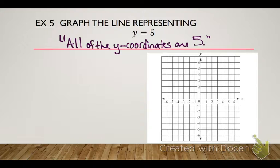So if all the y coordinates are 5, start picking points in your brain that would have the y coordinate be 5. So like negative 3, 5, negative 1, 5, 4, 5. All of these points would have the y coordinate be 5. If we can make sense of that statement, we don't need to memorize that it's going to turn out to be a horizontal line.